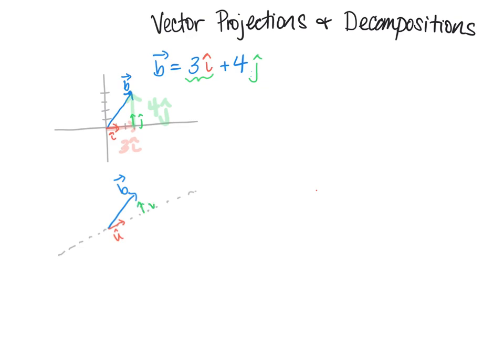From vector addition we can see that I can write the b vector as the sum of this light pink vector plus this light green vector. We want to find those new vectors, and I could do this for any line — rotate it any way — and see the blue vector as a sum of these new pink and green vectors.